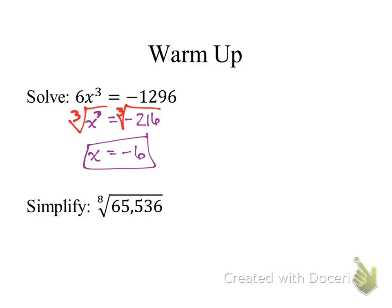This one, eighth root of that big number, if you actually took four times itself eight times, it's actually four to the eighth. Those undo each other, so it's just left with four.